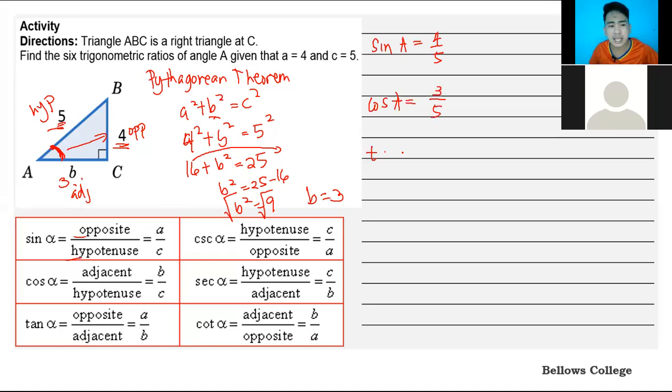Cosecant A, since it's the reciprocal or inverse of sine, we just flip 4 over 5 to get 5 over 4. Secant A is 5 over 3, and cotangent A equals 3 over 4. So that's the six trigonometric ratios.